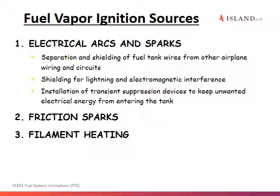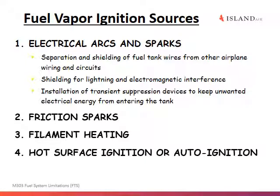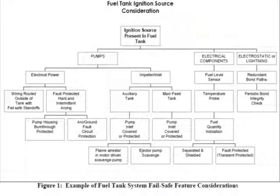Other ignition sources include filament heating, hot surface ignition, and auto-ignition. These create heat, and when heat is transmitted into the fuel tanks it may cause the fuel-air mixture to become more apt to explode. This flow chart goes through the different sources of ignition — at the top we have pumps, electrical components, and lightning or electrostatic sources — and then shows the different ways these devices create ignition sources.